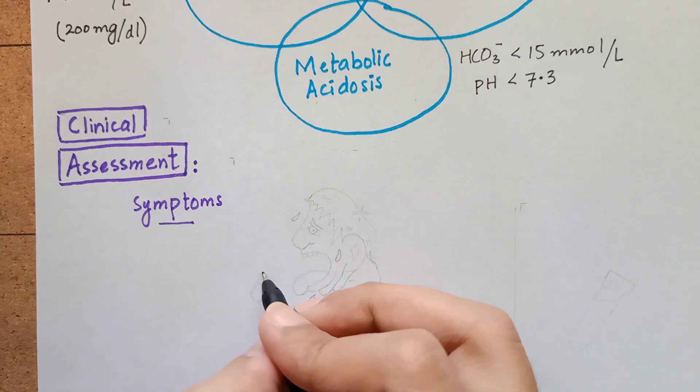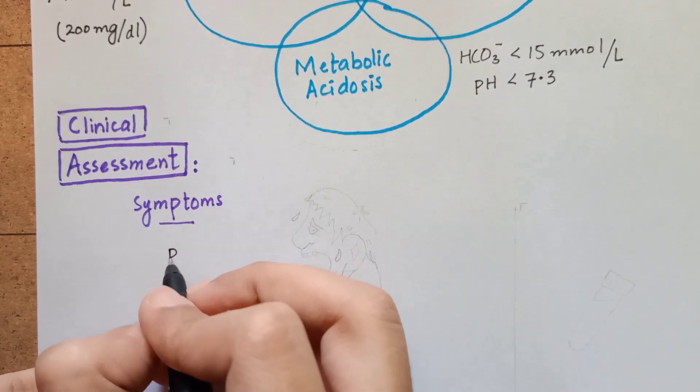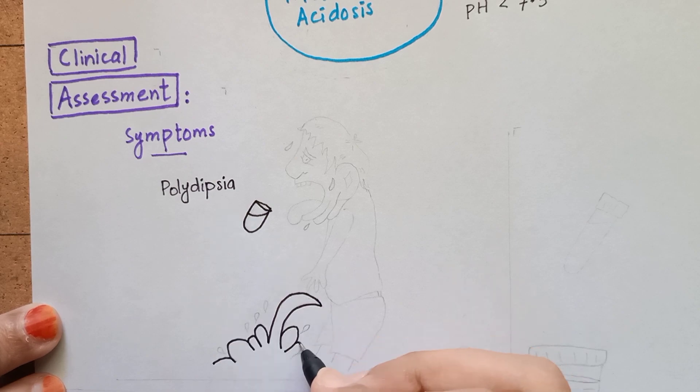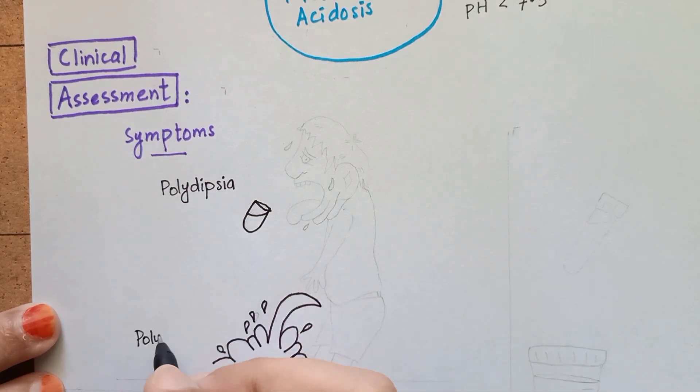Diabetic ketoacidosis usually develops slowly. Initial symptoms include being very thirsty, that is polydipsia, and frequent urination, that is polyuria.